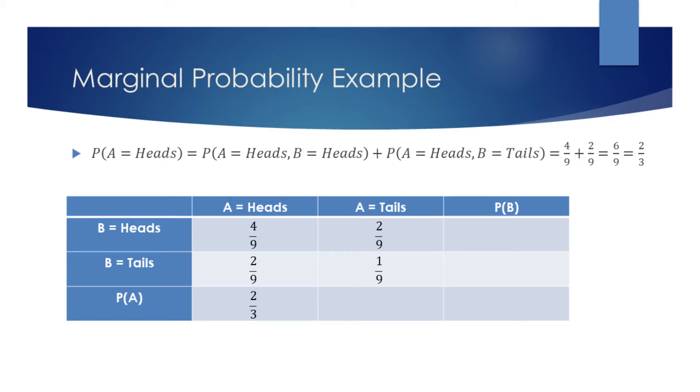Another when A displays heads and B displays tails with probability 2 9ths. Adding up these two probabilities, we find that the probability for the coin A to display heads is 2 3rds.